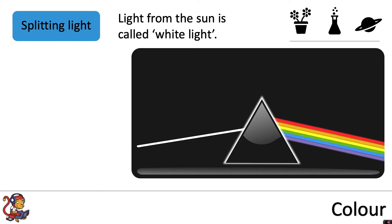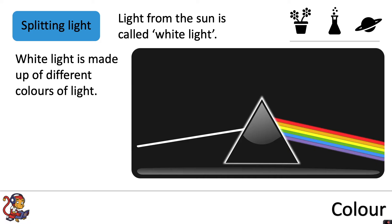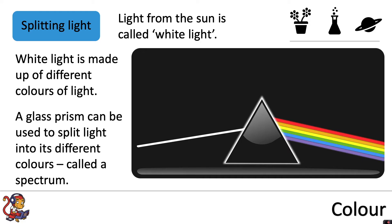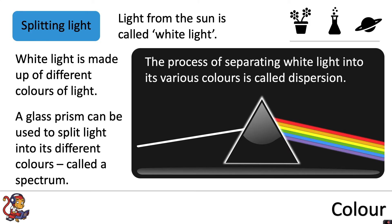Light from the Sun is called white light. White light is made up of different colours of light. A glass prism can be used to split light into its different colours, called a spectrum. The process of separating white light into its various colours is called dispersion.